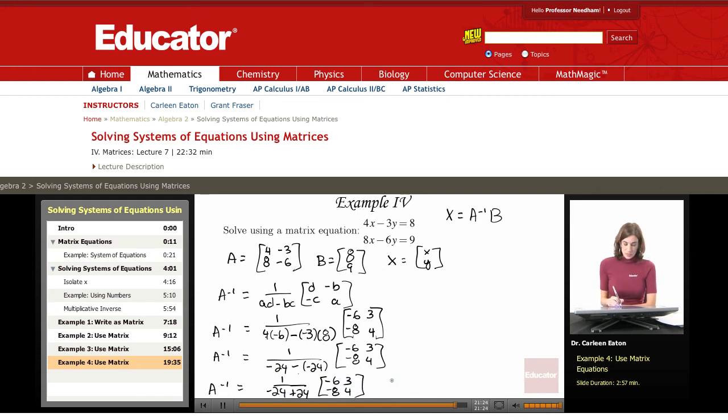Because taking this one step further, this gives me 1 over 0. And it really doesn't matter what this matrix is over here, because this is undefined.